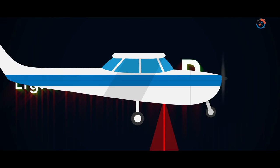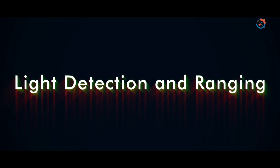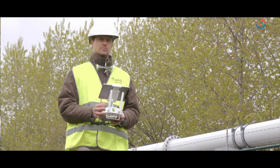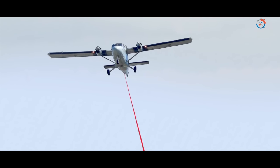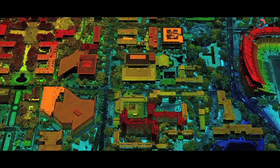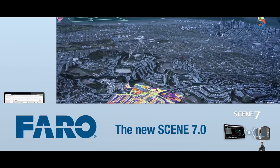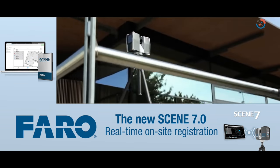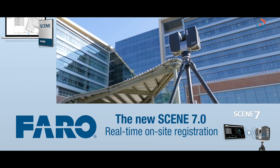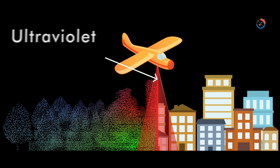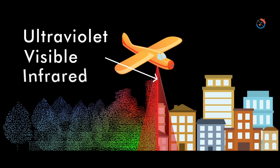LiDAR: Light Detection and Ranging. LiDAR is a remote sensing method that uses laser to measure elevation like ground, forest and buildings. LiDAR uses ultraviolet, visible or near infrared source to sense objects.